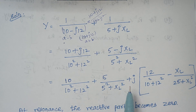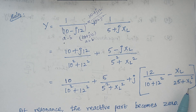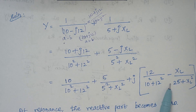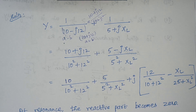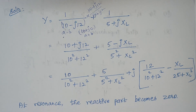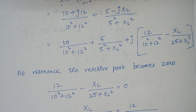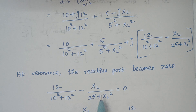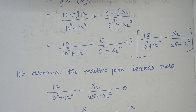The next step is expanding the expression and separating the real and imaginary terms. At resonance, the reactive part becomes zero. So we equate the imaginary part to zero, which gives us an expression. By rearranging this expression we can find the value of XL by solving the resulting quadratic equation.